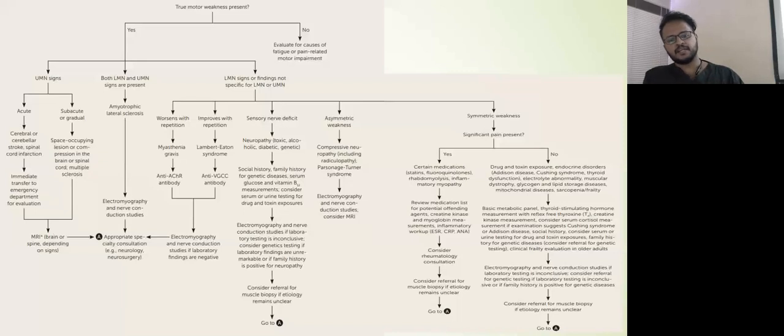In case of LMN findings or non-specific findings, we have to be more specific. If weakness is worsening with repetition, think myasthenia. If improving with repetition - Lambert-Eaton. If there's sensory nerve deficit, think of neuropathy with both motor and sensory involvement. Asymmetric weakness - think cord compression. Symmetric weakness, as our patient had - now we have to think whether there is pain or not.